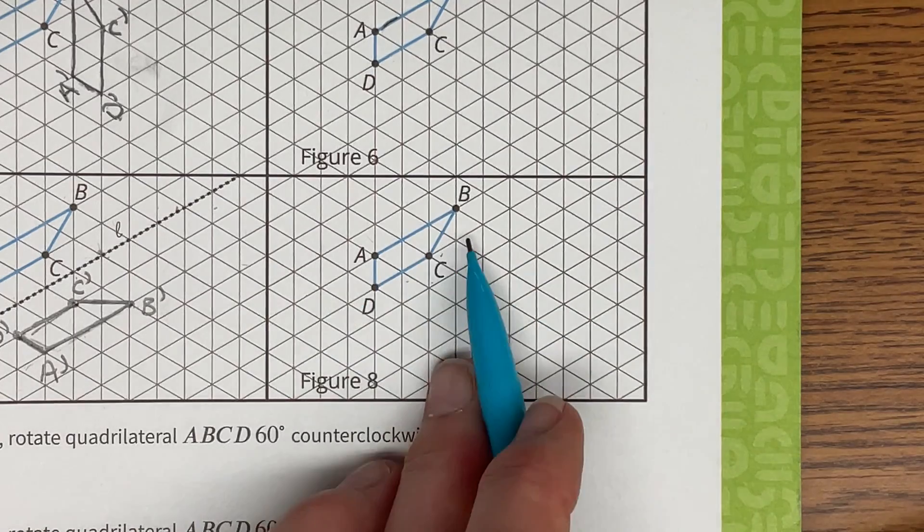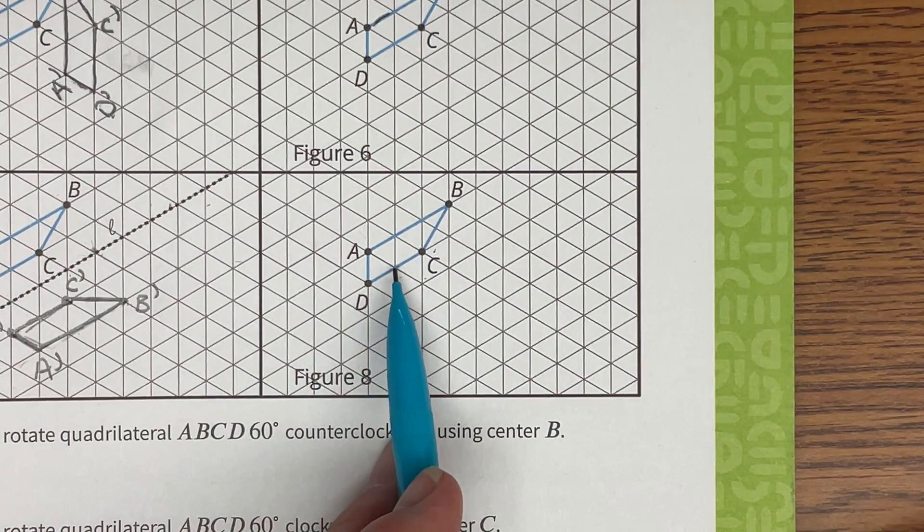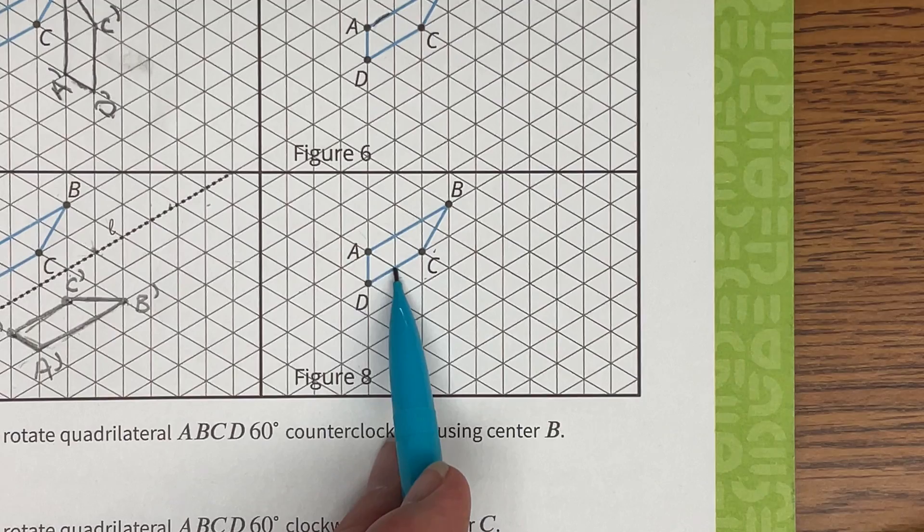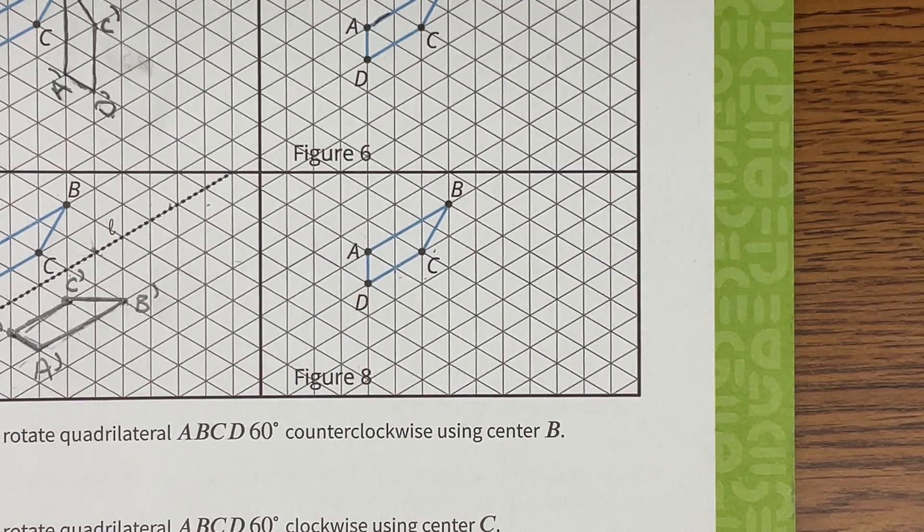So I'm going to show you the example here for figure 8 on how to translate this image where A translates to C.